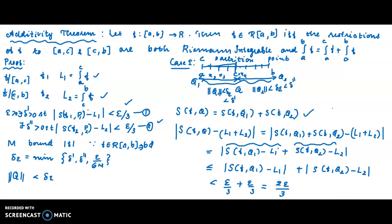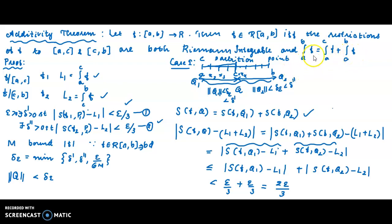So the difference between S(f, Q) and L1 plus L2 can be made arbitrarily small. Therefore, the integral of f over [a, b] is equal to the integral from a to c of f plus the integral from c to b of f.